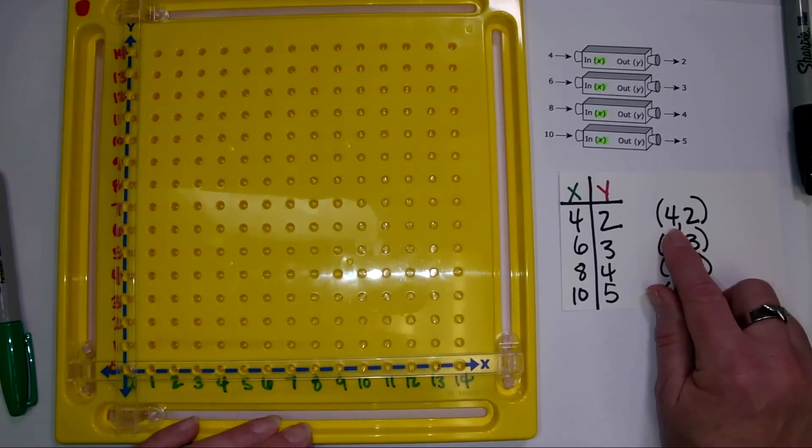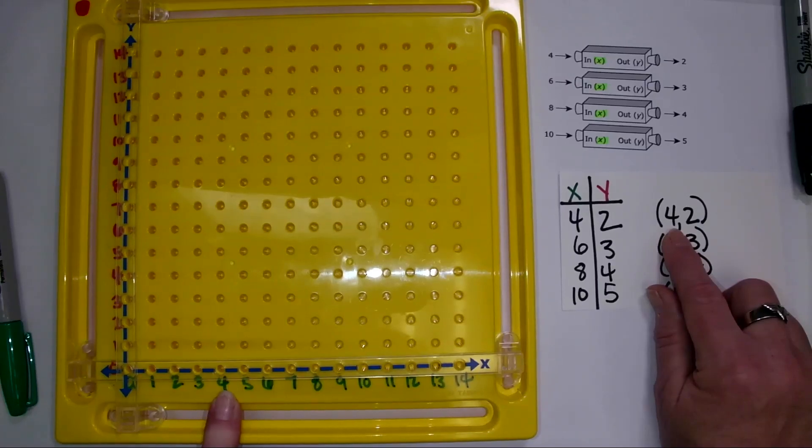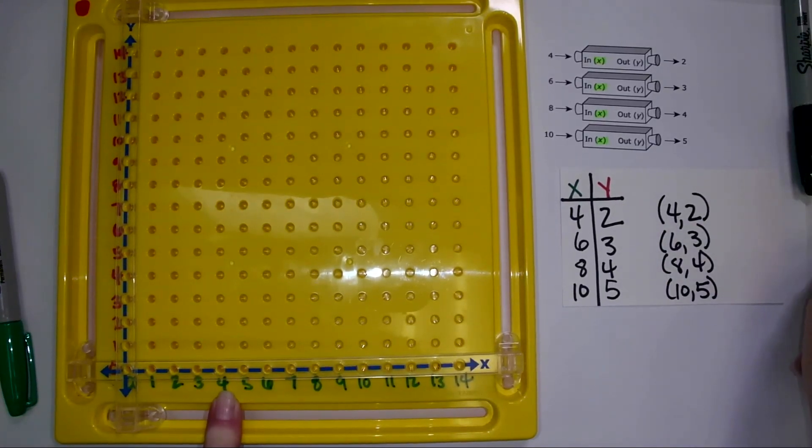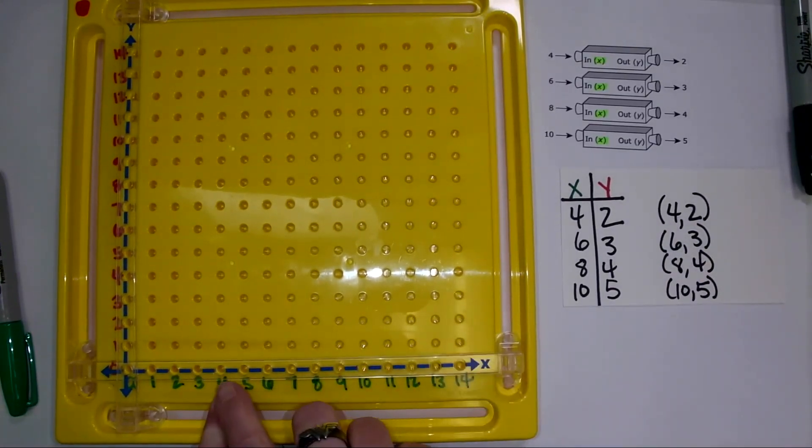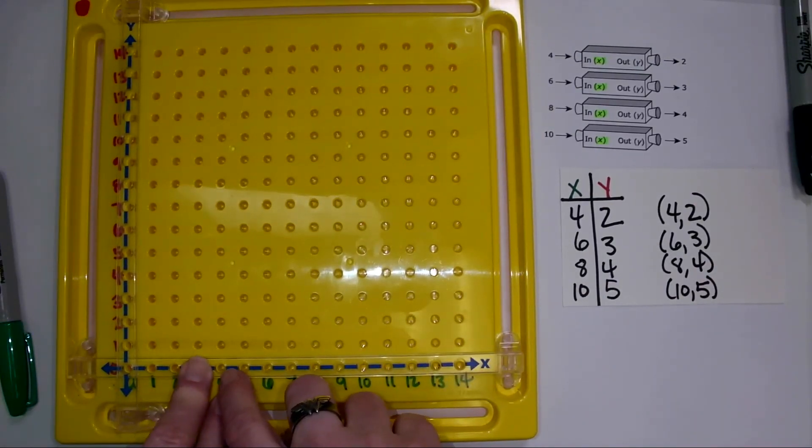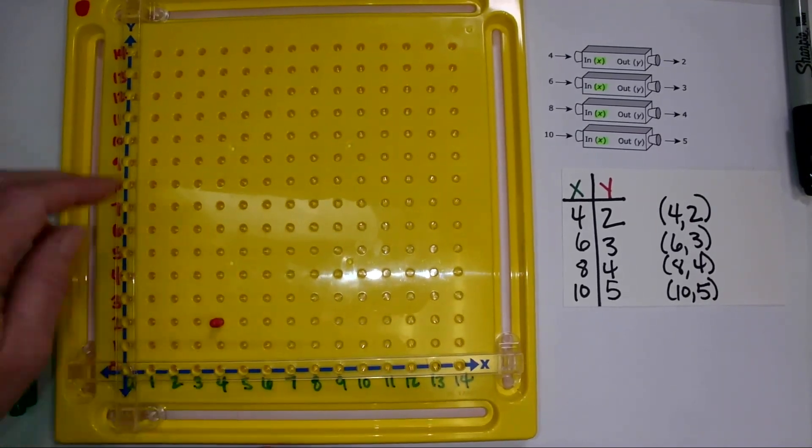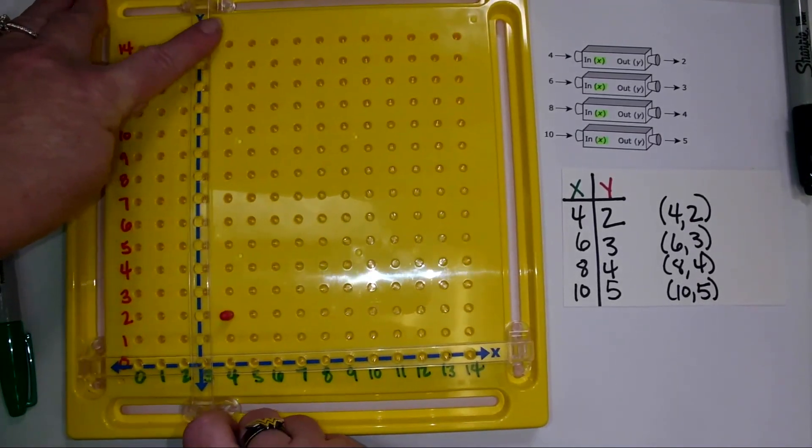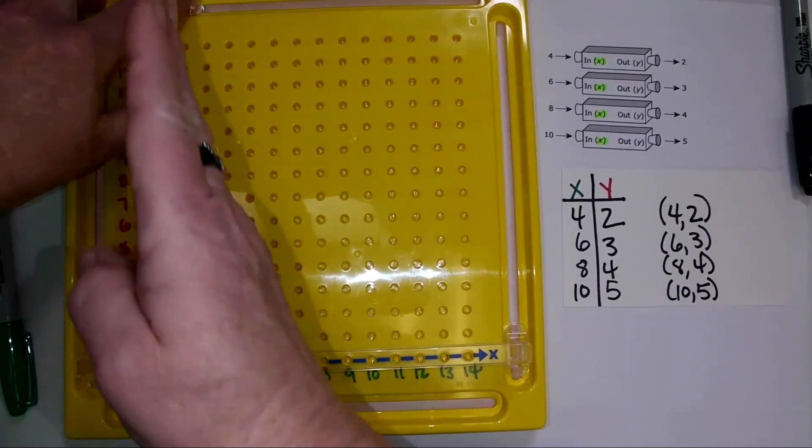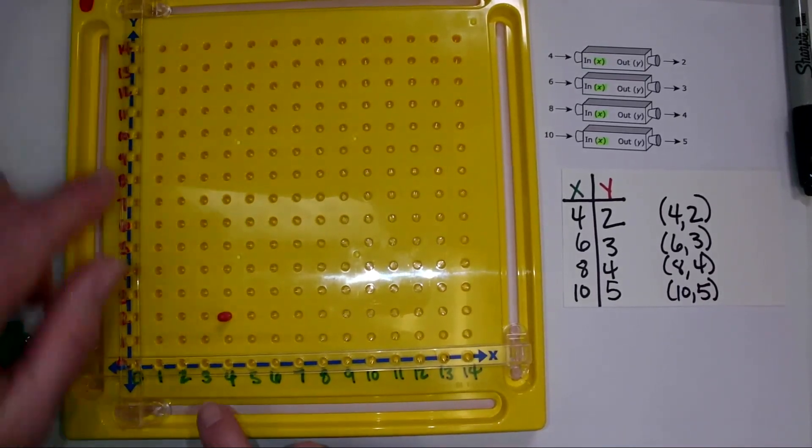My first point is 4, 2. So I'm looking for 4 on my x axis. And then most students can count up from that the 2 and go 1, 2. If a student struggles, you can always move this y over so that they can see that straight line that goes up from 4.